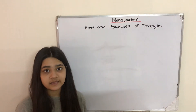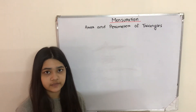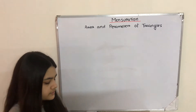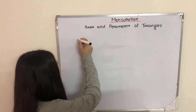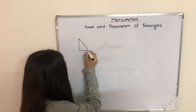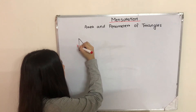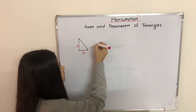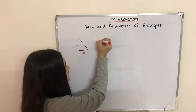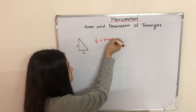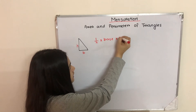But to find the area of triangles we have different formulas. If the triangle is a right angle triangle we use the formula half into base into height. A right angle triangle looks like this — this is our height and this is our base — and we use the formula half into base into height.